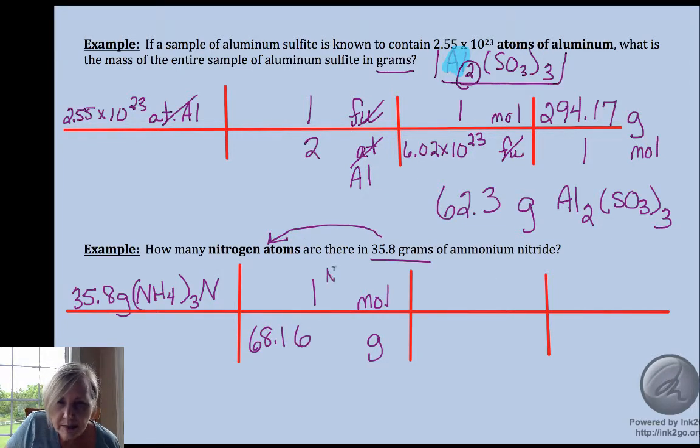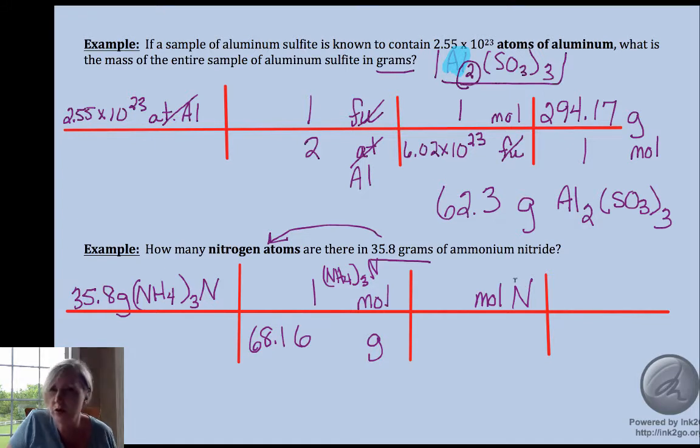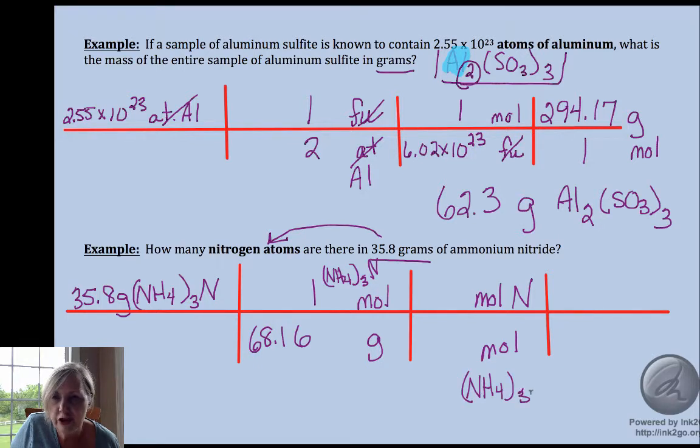I'm going to start with 35.8 grams of ammonium nitride. That means it's the N3- ion. I did this just to make it a little trickier when you were counting those atoms within - I wanted to make sure you paid attention to all of the subscripts there. Mass to moles, use molar mass, and the molar mass of ammonium nitride is 68.16 grams.